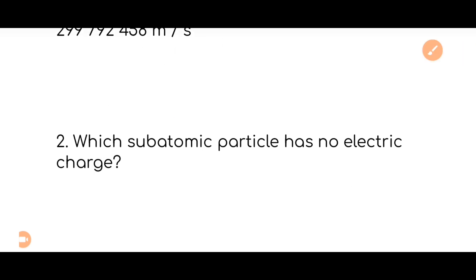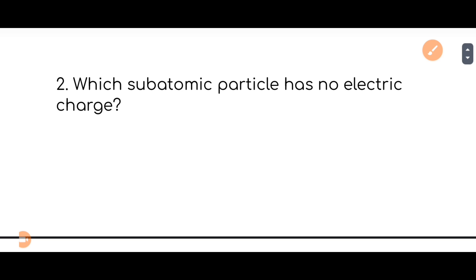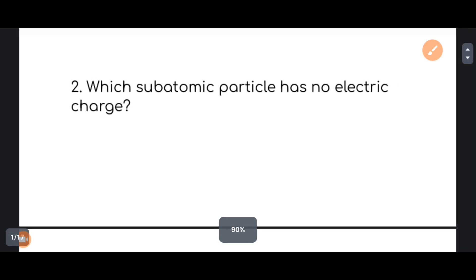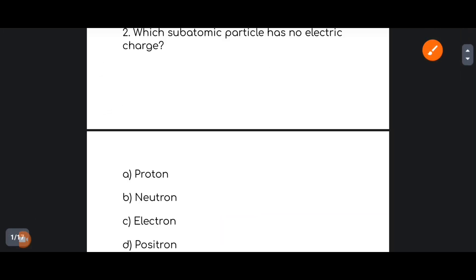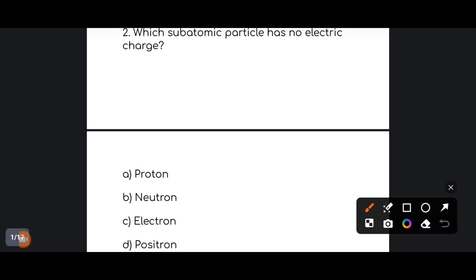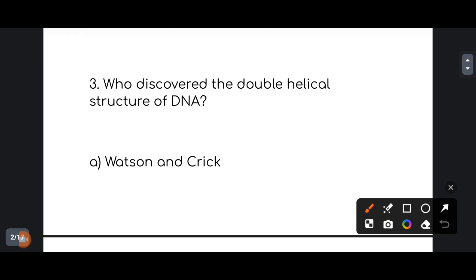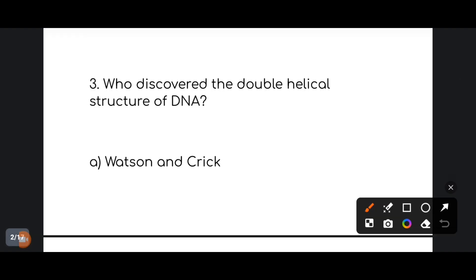Next. Since the atomic particle has no electric charge — what is the correct answer? The correct answer is option number B: Neutron. The neutron is the atomic particle with no electric charge.